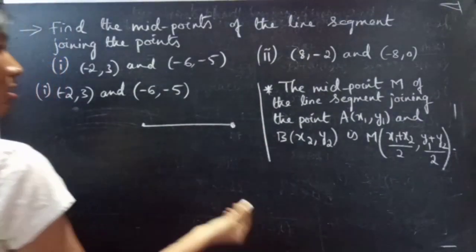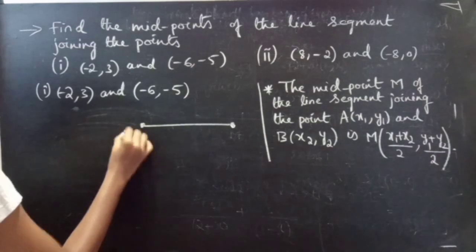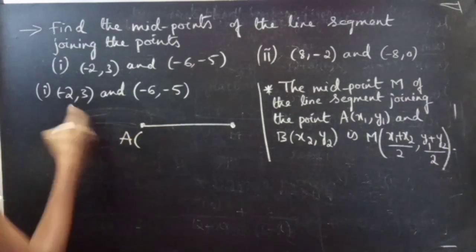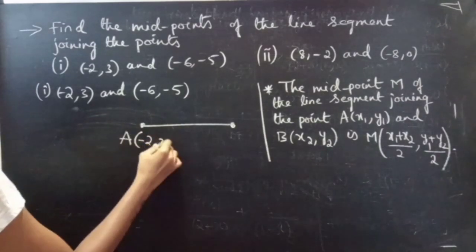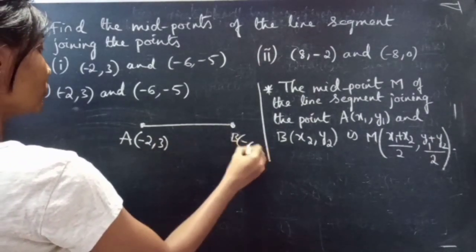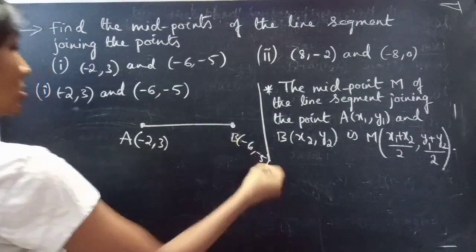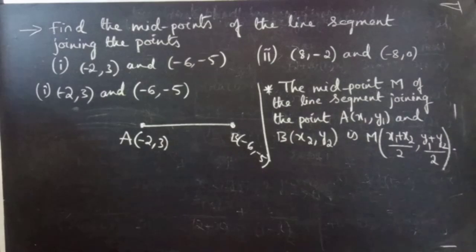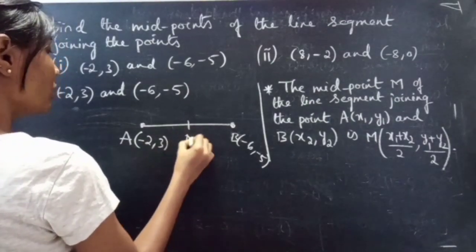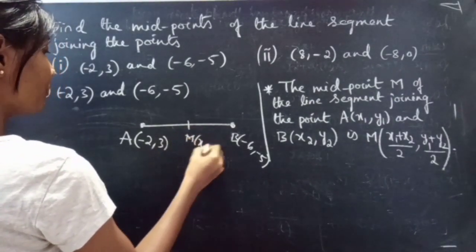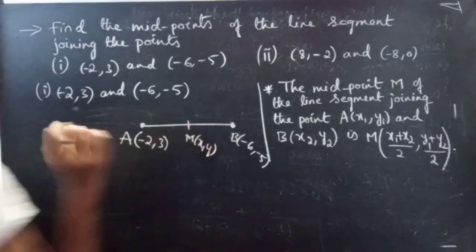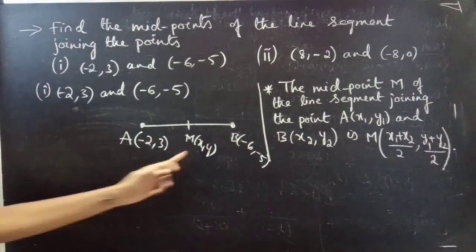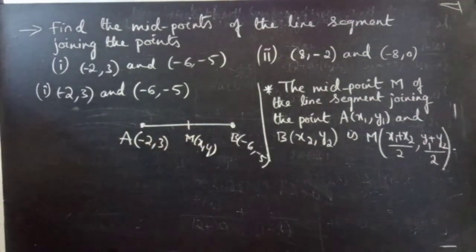If this is a line segment, the points say A minus 2 comma 3 and B minus 6 comma minus 5 are the endpoints of the line segment. So here we have to find the midpoint M as an ordered pair X comma Y, where X and Y are unknown.